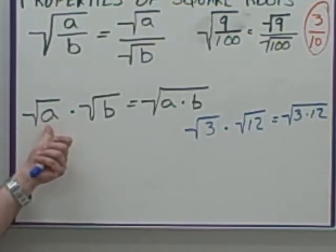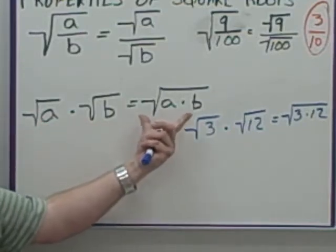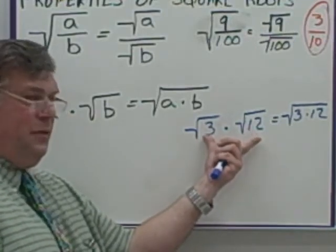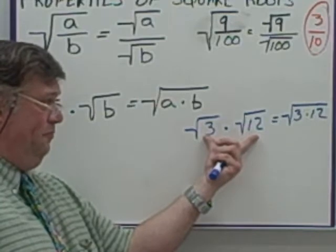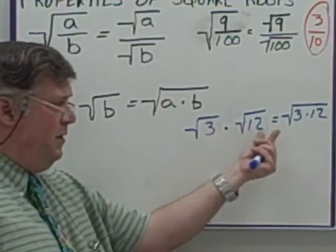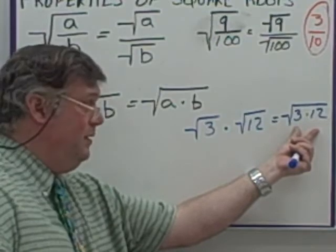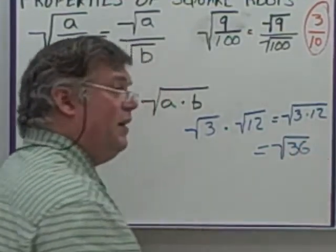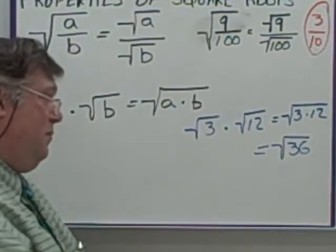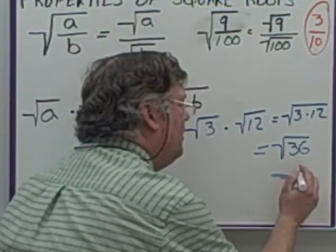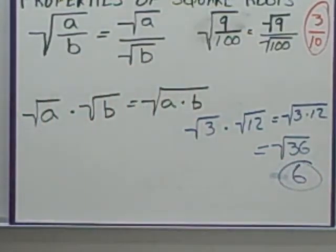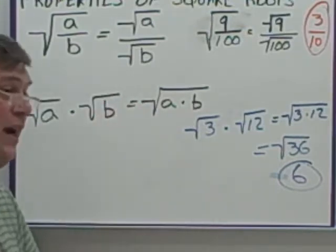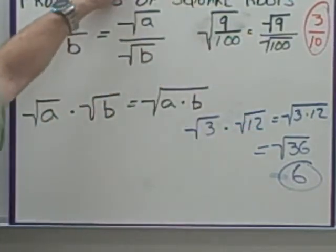For multiplication: if you take the square root of a times the square root of b, it's the same as the square root of a times b under the radical. For example, the square root of 3 times the square root of 12 — both give long decimals individually. But combine them into the square root of 3 times 12, which is the square root of 36, and that's a perfect square equal to 6. Using these properties lets you simplify mentally and avoid rounding issues from decimals.